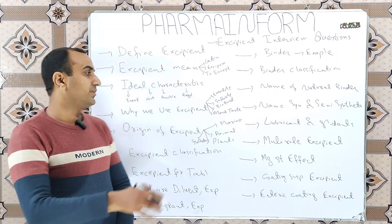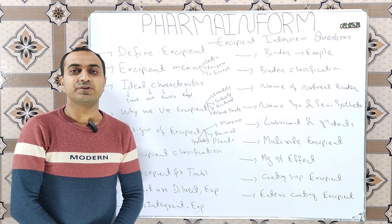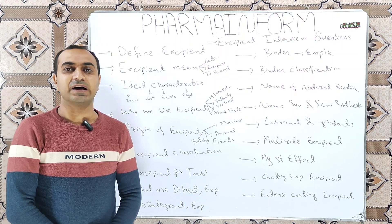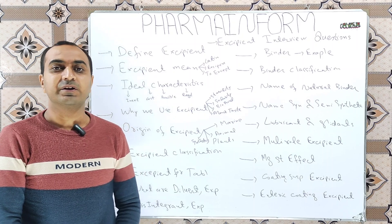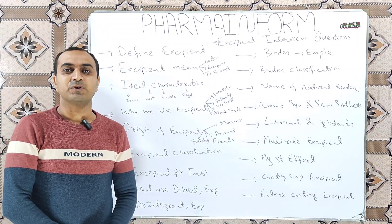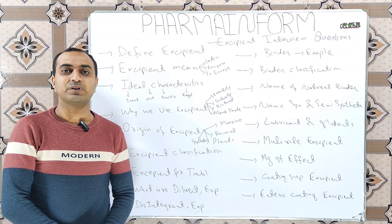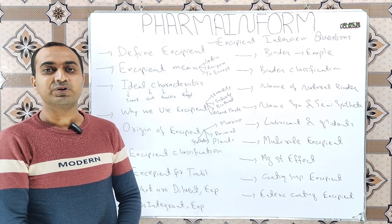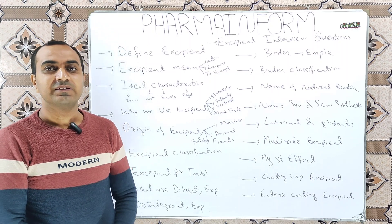The next question is: what are the ideal characteristics of an excipient? The ideal characteristics are: it must be pharmacologically inert, it must be cost effective, it must be commercially available, and it must be compliant to the regulatory bodies.